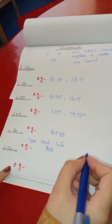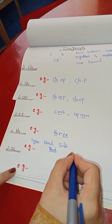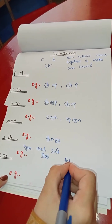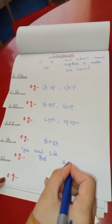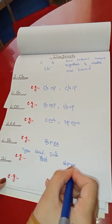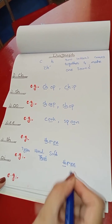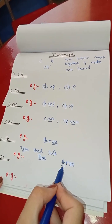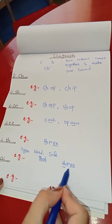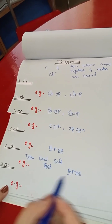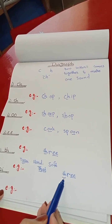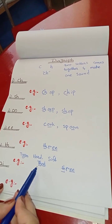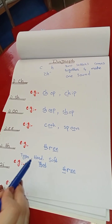Now let's learn about soft sounds. The soft TH sound is 'th'. Like 'th-r-ee' — it becomes 'three'. There are two digraphs in it: TH and EE. TH here is a soft sound, while the hard TH sounds like 'th' as in 'that'.